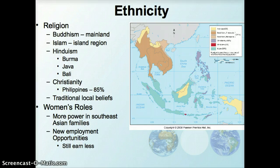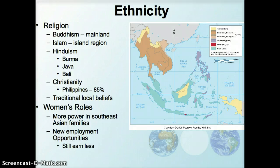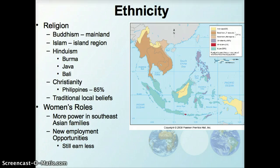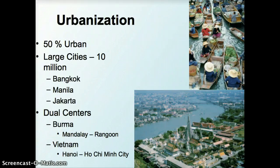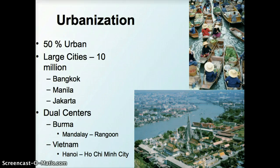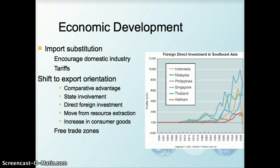There's also integration between traditional local beliefs and larger world religions. Southeast Asia is interesting in terms of women's roles — women in Southeast Asian families tend to have more power within the family, making it somewhat less patriarchal. There have been new employment opportunities for women with the new industrial division of labor, though women often still earn less. The area is about 50% urbanized with many large cities of over 10 million people, such as Bangkok in Thailand, Manila in the Philippines, and Jakarta in Indonesia, and dual centers in places like Burma with Mandalay and Rangoon, and Vietnam with Hanoi and Ho Chi Minh City.